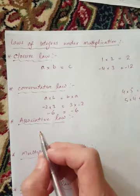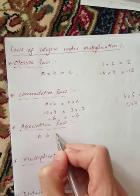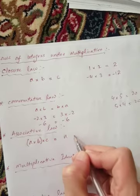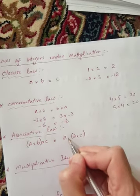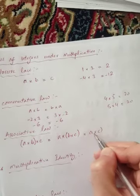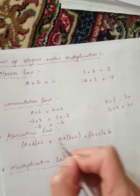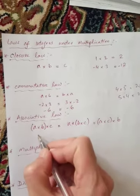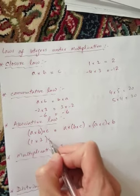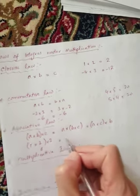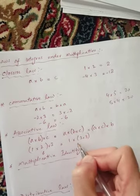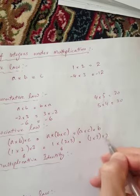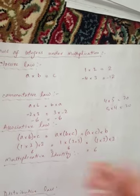Associative law: when we have three numbers a, b, and c, we can multiply them in different groupings. Whether we multiply a times b first and then multiply by c, or multiply b times c first and then multiply by a, the answer will be the same under all conditions. For example, let's take 1, 2, and 3. One times two times three equals six. Or one times the product of three times two also equals six.